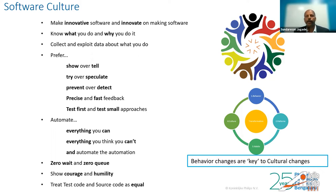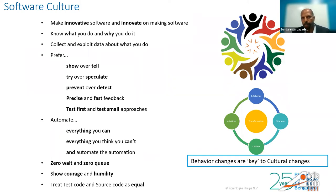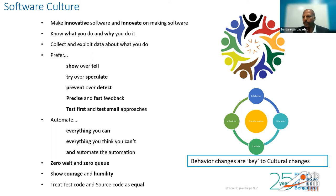Precise and fast feedback — how could you make the loop iterative and very fast in all that we do. Testing is the most important part. We always tell people: do not differentiate between test code and development code. Treat test code and source code as one and equal. On average, when we do analysis and observation, close to 40% of the test code has glaring duplications. Even one line of duplication costs you money, costs the organization money, because that has to be maintained. If you see waste anywhere, it's waste wherever you find it. Focus on automation — everything you can, automate the automation.